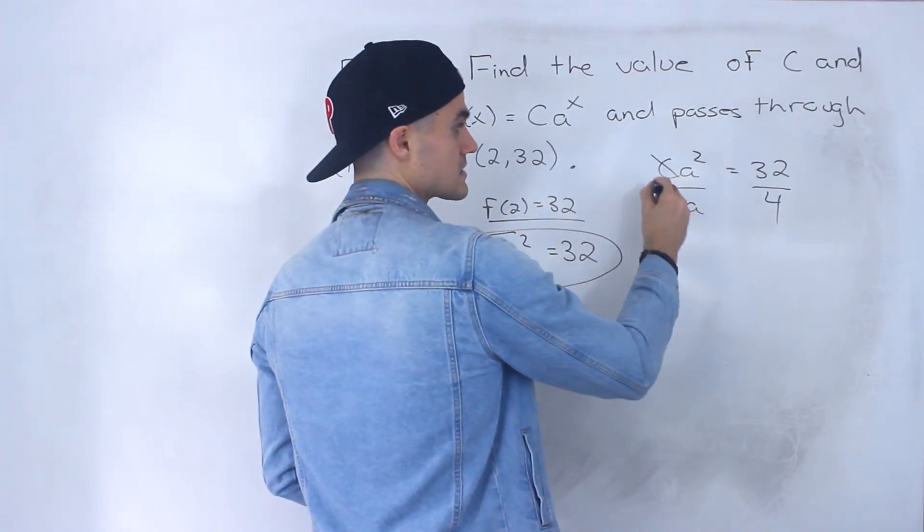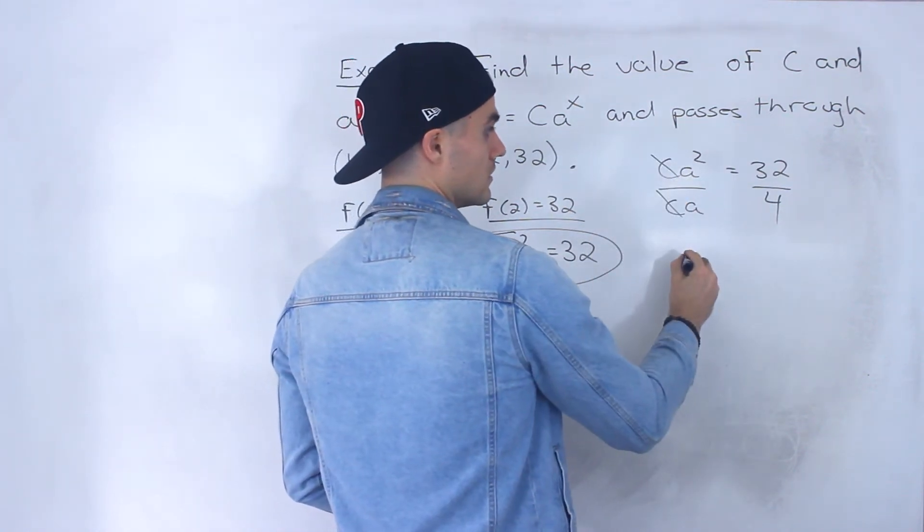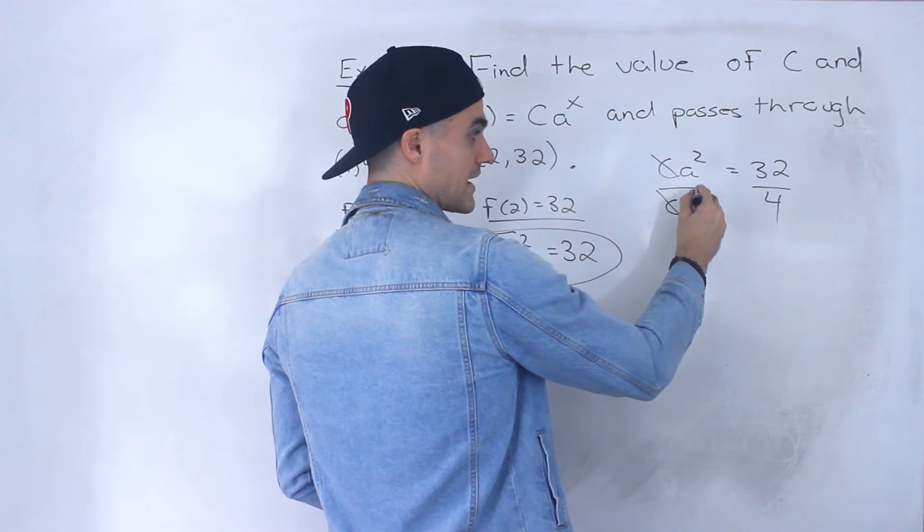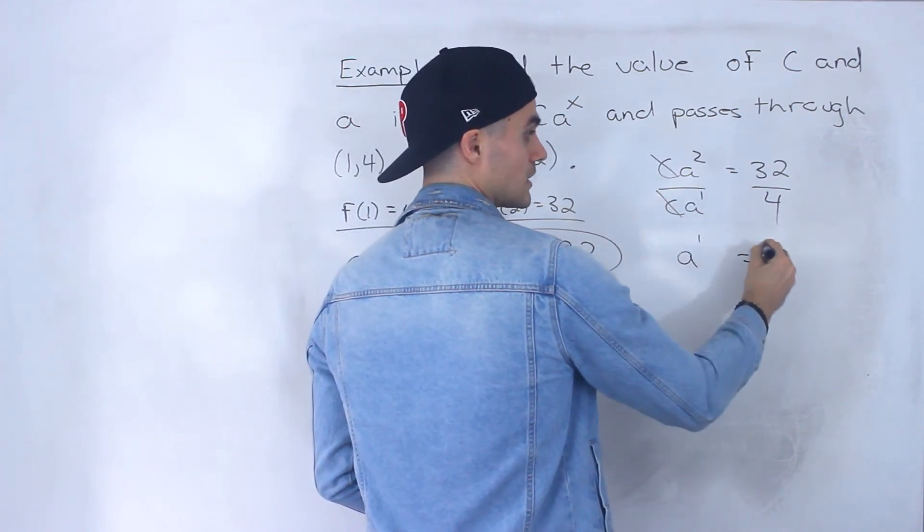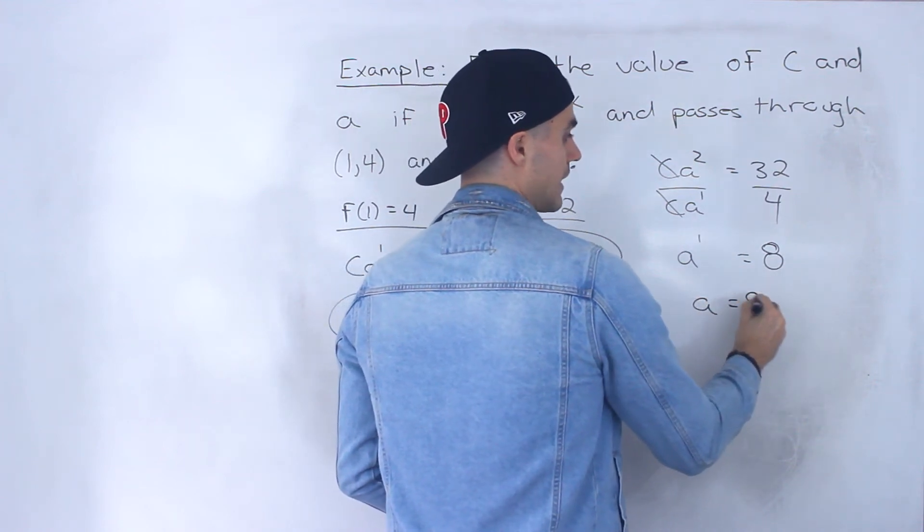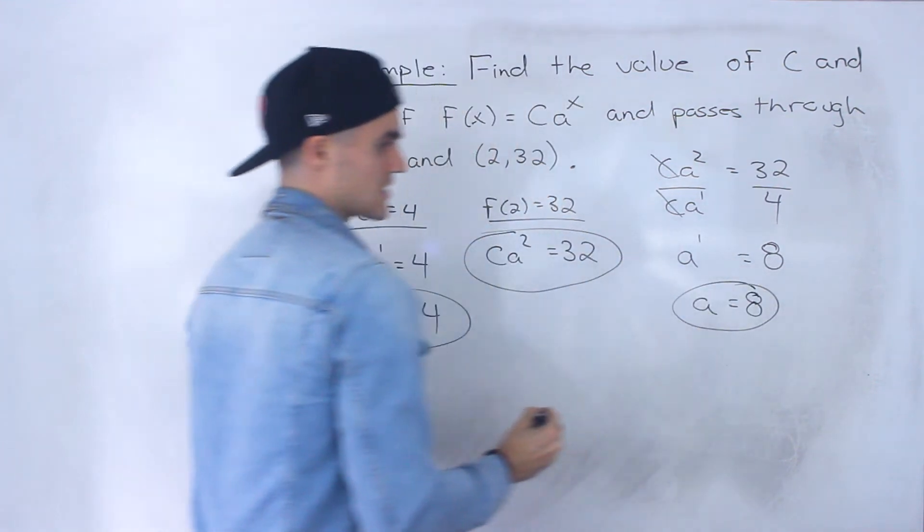And now notice the c's would cancel out. And now we have a squared over a to the power 1, which is just a to the power 1. And that's going to equal 8. So a equals 8.